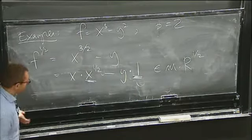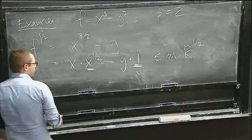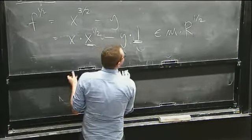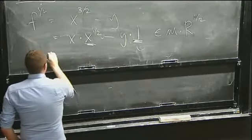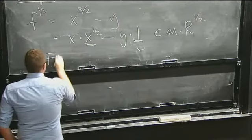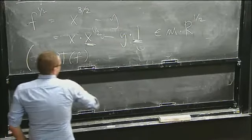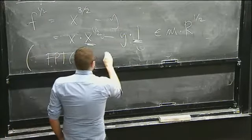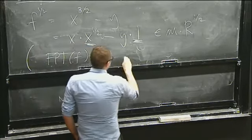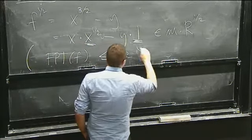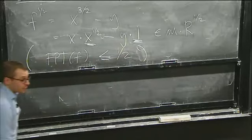The conclusion here is that the F-pure threshold of f in characteristic 2 is less than or equal to 1/2, just from this one calculation. Let's check that it actually is 1/2.